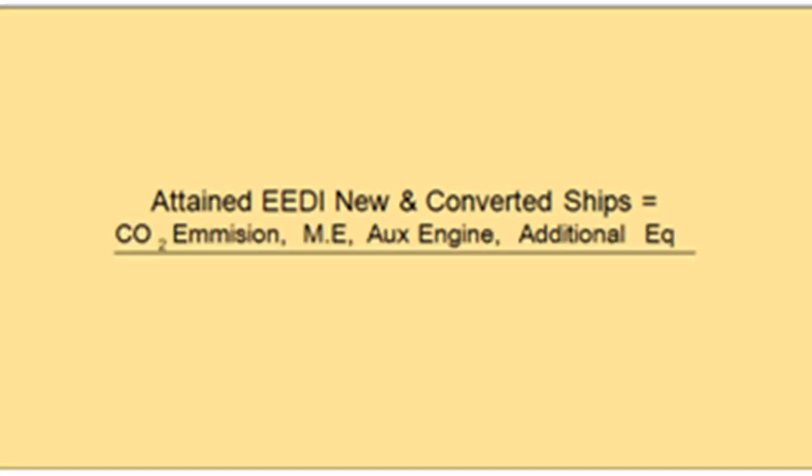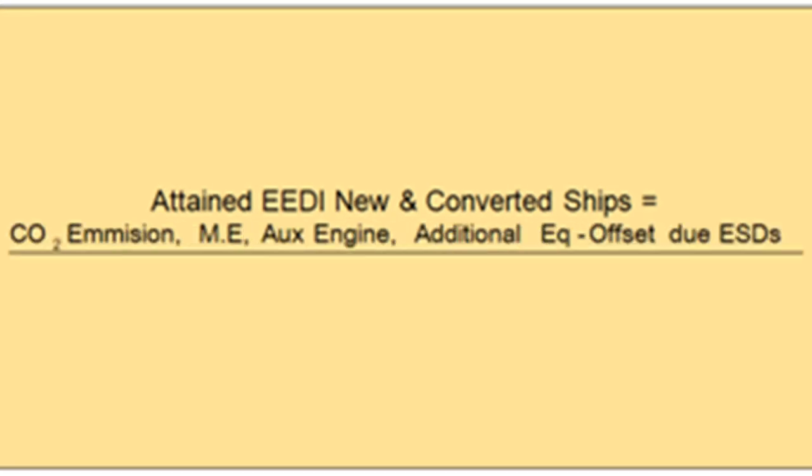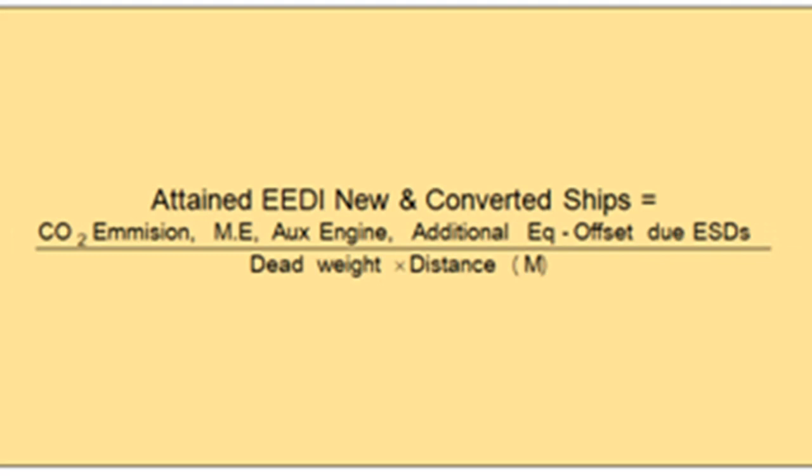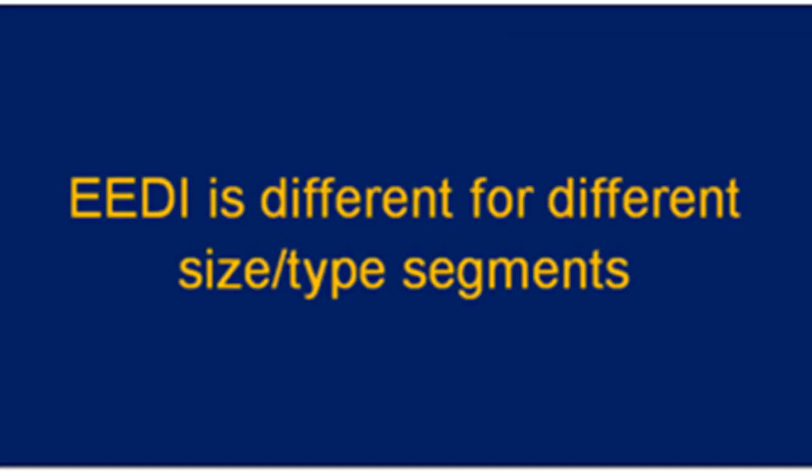Next, we want to study what is attained EEDI. In attained EEDI calculations, we take the help of an EEDI technical file. In that file, there is a procedure written on how the calculations will be done. These calculations will be done by the administration or a recognized organization approved by the administration, using the guidelines provided by IMO. Naturally, the EEDI figure is different for different ship types and sizes.